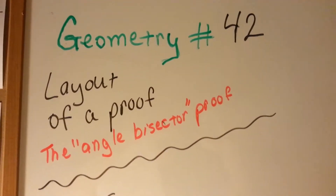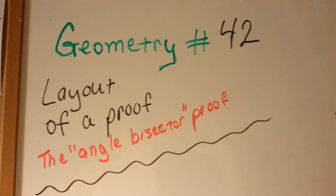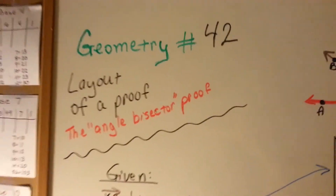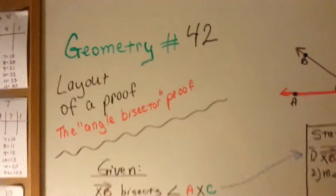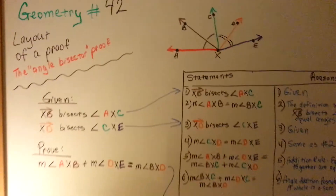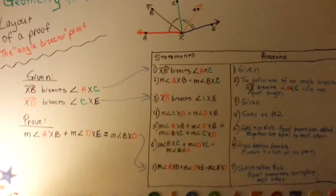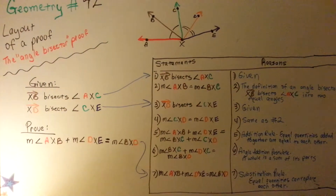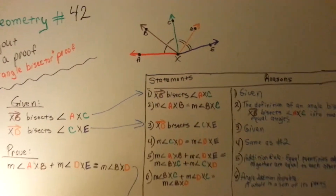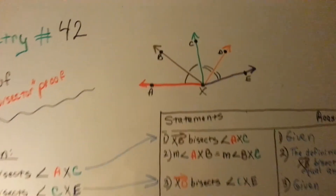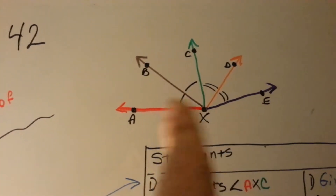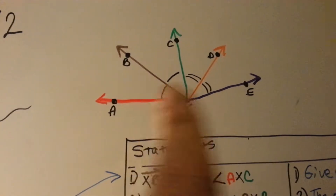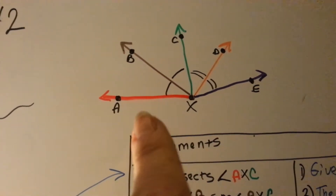Layout of a Proof: The Angle Bisector Proof. The last few videos we've done some proofs as examples to show you how they're done, and now we're going to do the Angle Bisector Proof. So let's look at our picture first — I've made it colorful so that you can follow along easier with the lines and angles.